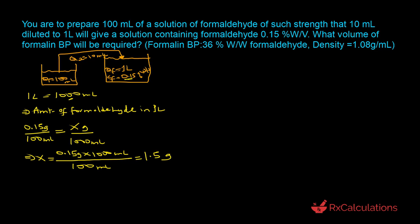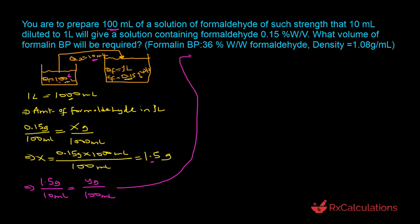It's important to note that all 1.5 grams came from the 10 milliliters taken from the stock solution. We use that to determine how much formaldehyde is in the entire 100 milliliter stock. Setting up the proportion: 1.5 grams / 10 mL = y grams / 100 mL. Solving for y: y equals 1.5 times 100 divided by 10, which equals 15 grams.